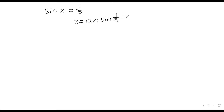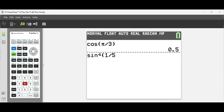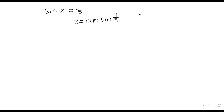Not the sine, but the arc sine. So inverse sine of one-fifth is going to give a messy decimal. Keeping three decimal places: 0.201. So here's a solution, but there are infinitely many. Often you're told you only want solutions in some interval, but that is not the case here, so we'll give all of them.